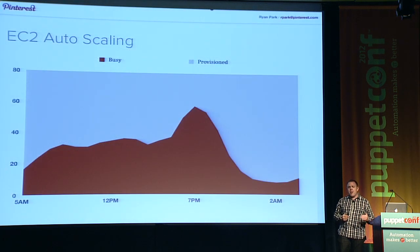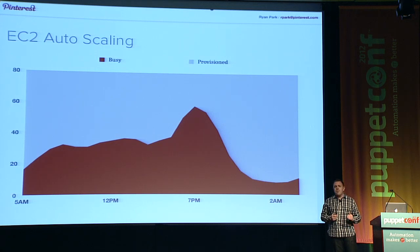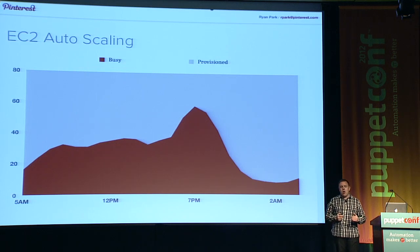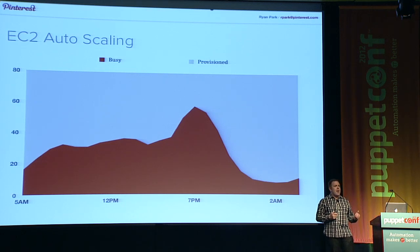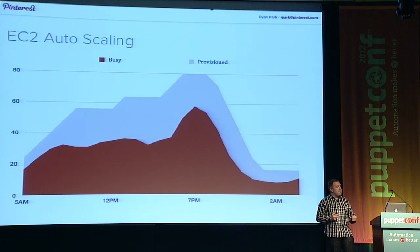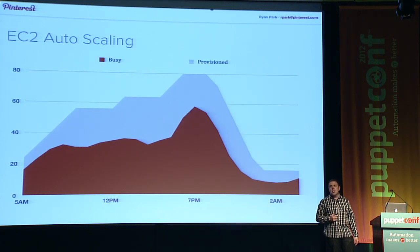I'd also like to talk about how we use Amazon EC2's autoscaling features. When I made this slide, we were running about 80 servers for our main web application. We need this much capacity to handle afternoon and evening peak traffic, but there's a lot of wasted capacity late at night. We recently implemented autoscaling to bring up more servers in the afternoon and evening and shut down servers we don't need late at night. By using autoscaling, we've cut the number of servers we're running on average by about 40%.